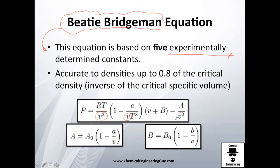Terms like volume or specific volume are everywhere. You're going to have these constants a, b, and c. The Beattie-Bridgeman equation is pretty accurate up to 80 percent of the critical density.